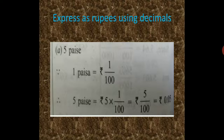Here, 5 paisa is given. As we all know that rupees 1 is equal to 100 paisa. Therefore, 1 paisa is equal to rupees 1 upon 100. So, 5 paisa is equal to rupees 5 into 1 upon 100, that means rupees 5 upon 100. In decimal form, it is rupees 0.05.